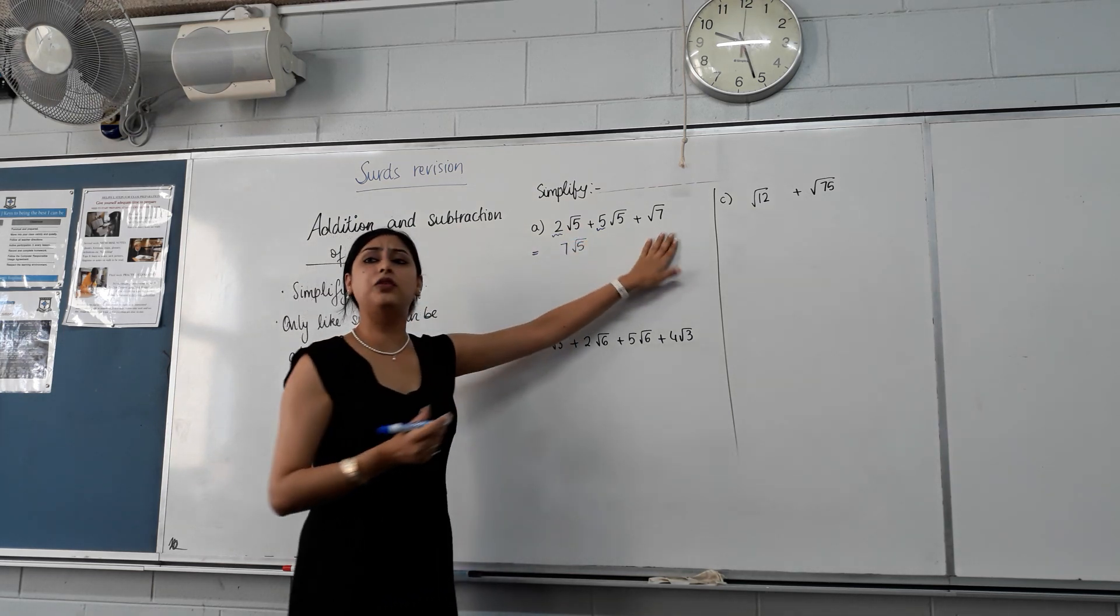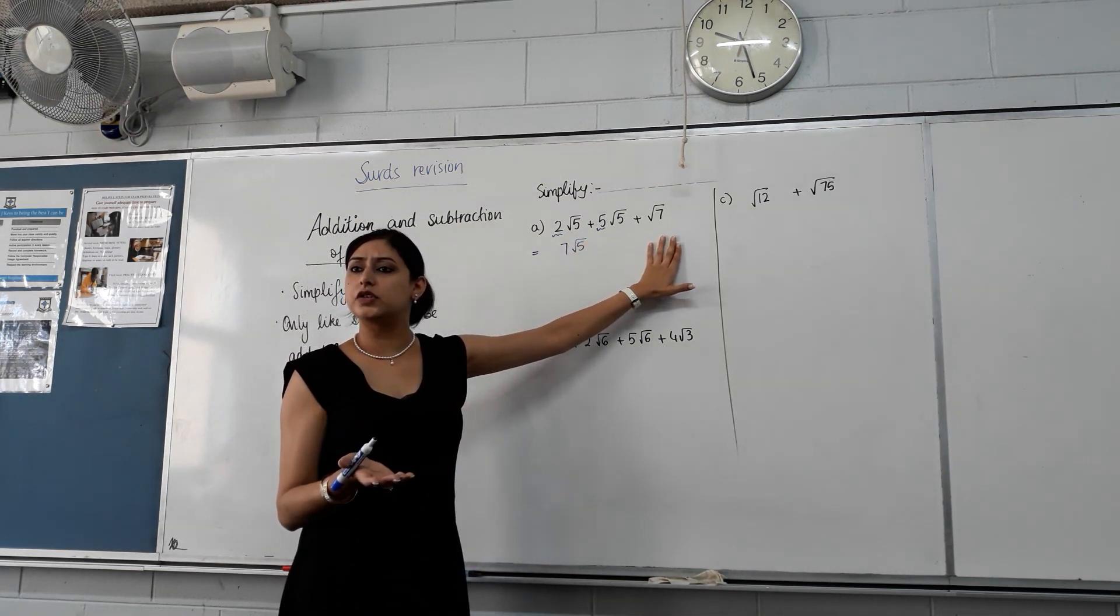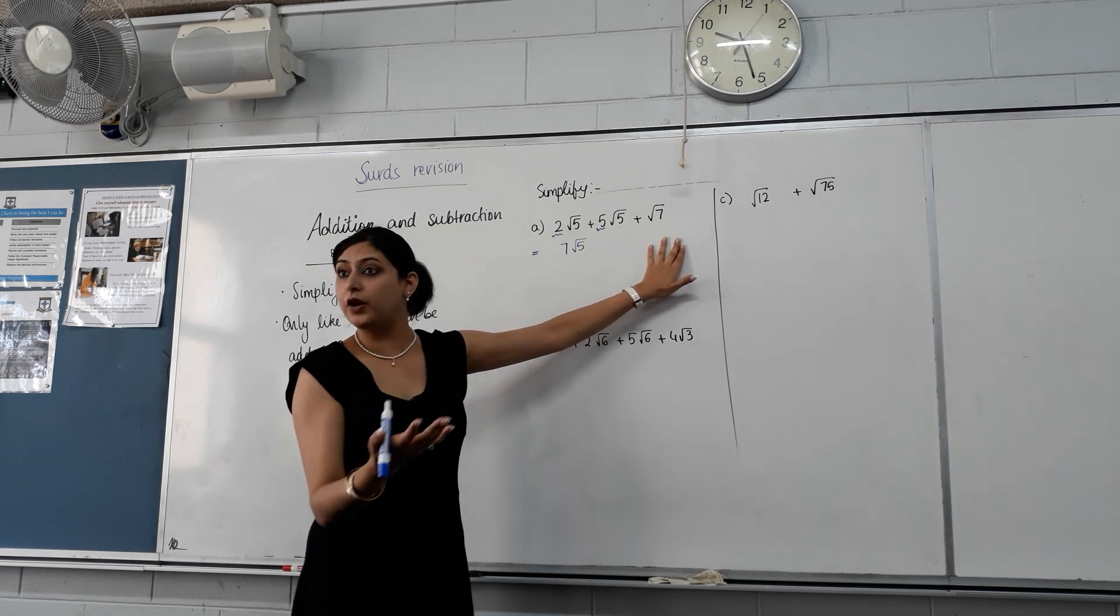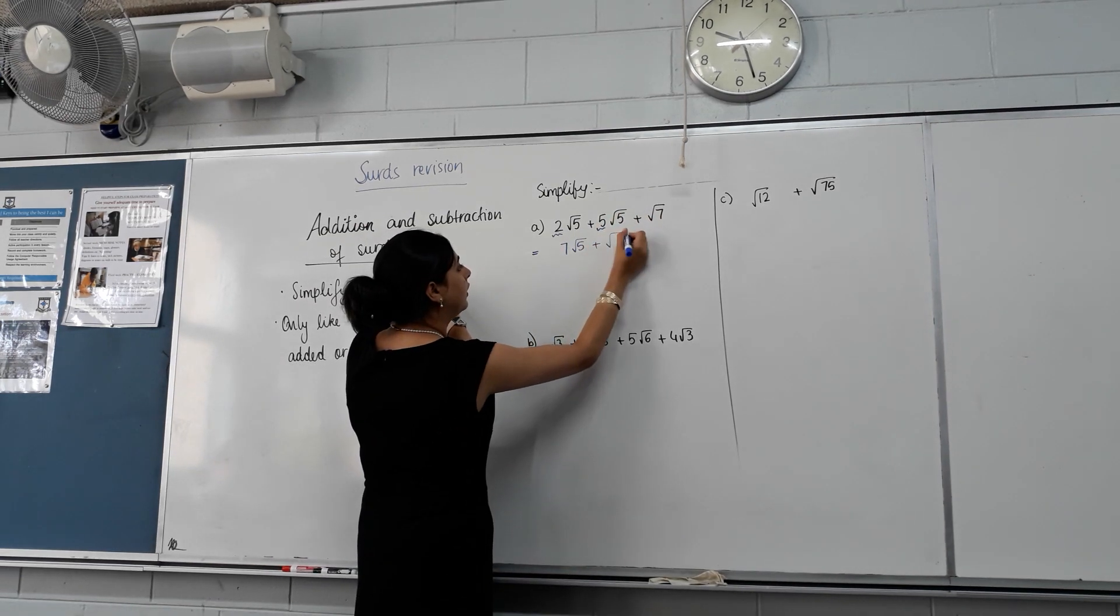And then I can't add root seven. It's like adding apples and oranges. But do I get rid of it? No, I still have the oranges. So what do I write? That's it.